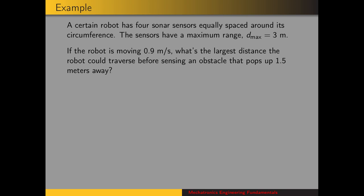We'll look at an example that incorporates some of the concepts of sonar range sensors that we've looked at. Say we have a mobile robot that has four sonar sensors equally spaced around its circumference. We could have a circular robot, one sensor in the front, one on the left side, one in the back, and one on the right side. Each of these sensors has a maximum range of three meters. Now, if that robot is moving at a certain speed, what's the worst case scenario for how far it could move after an obstacle pops up a meter and a half away in front of it?